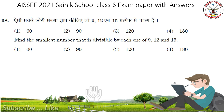Next question: Find the smallest number that is divisible by each one of 9, 12 and 15. We need to find the smallest number. Answer is 180.